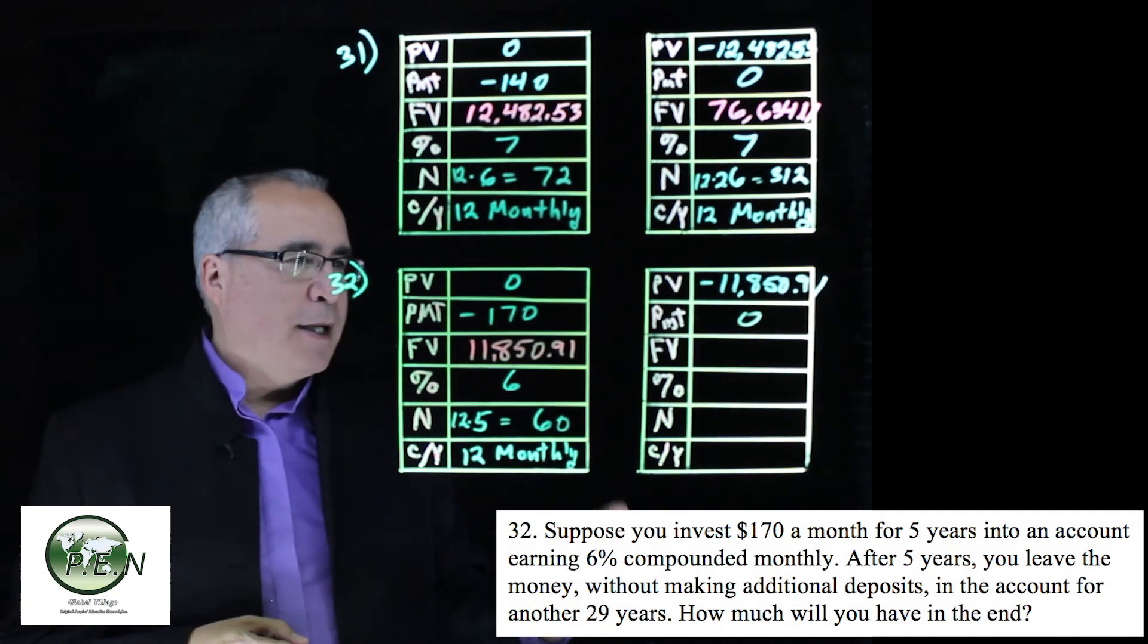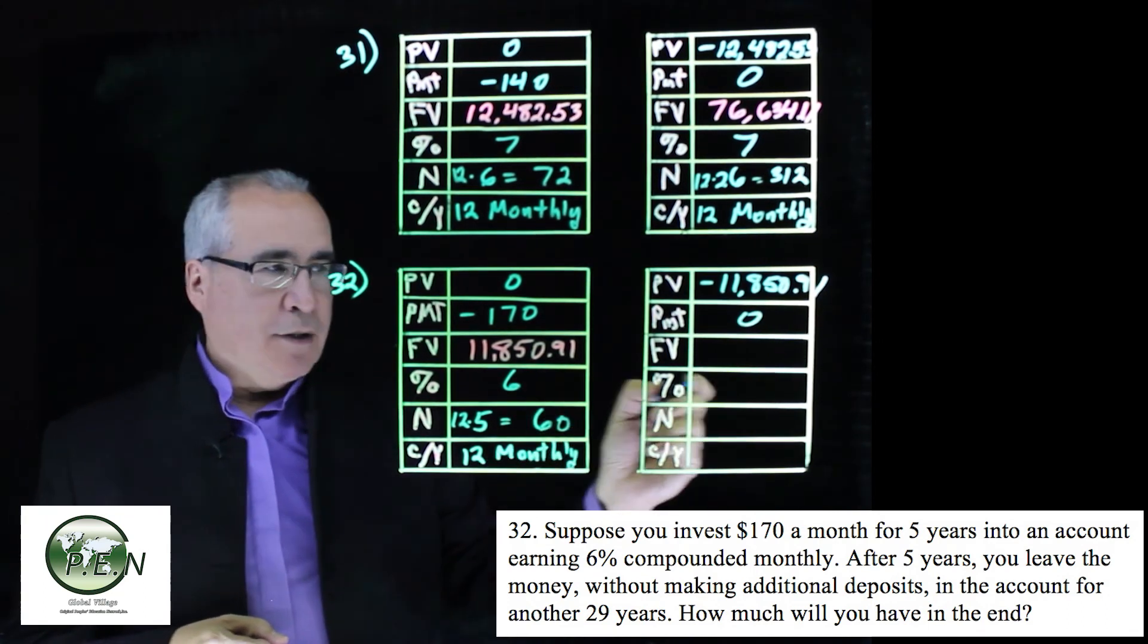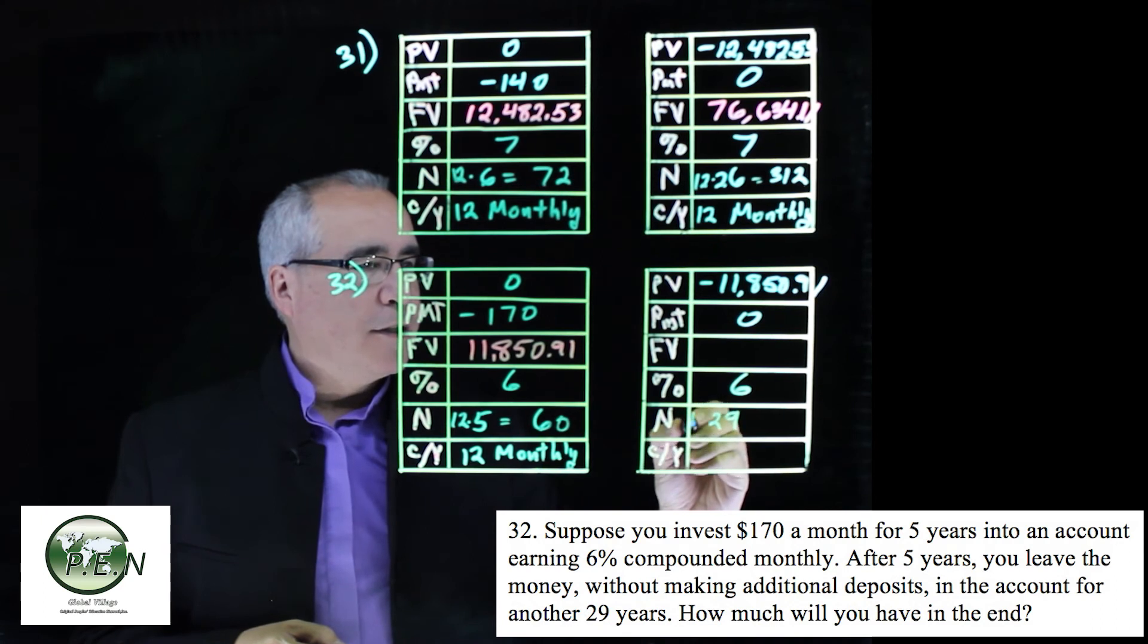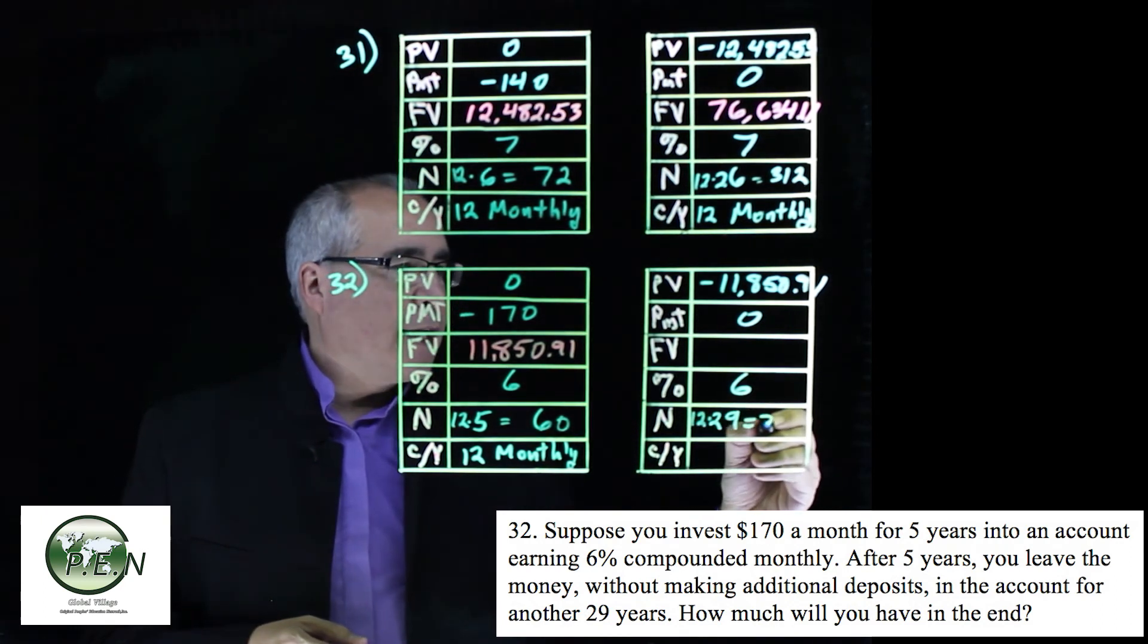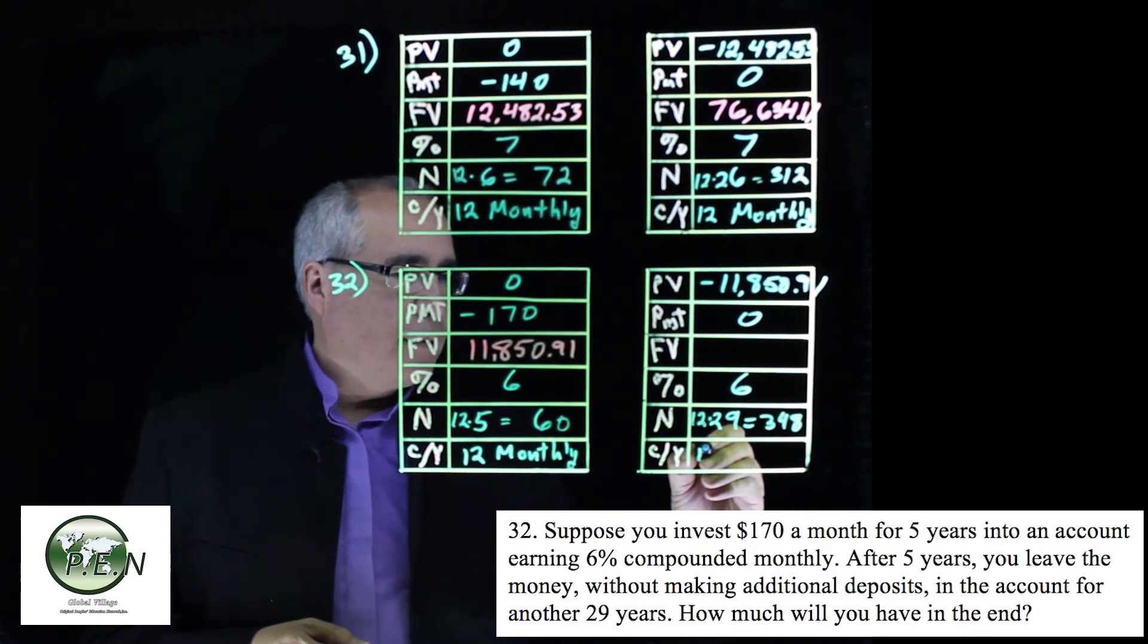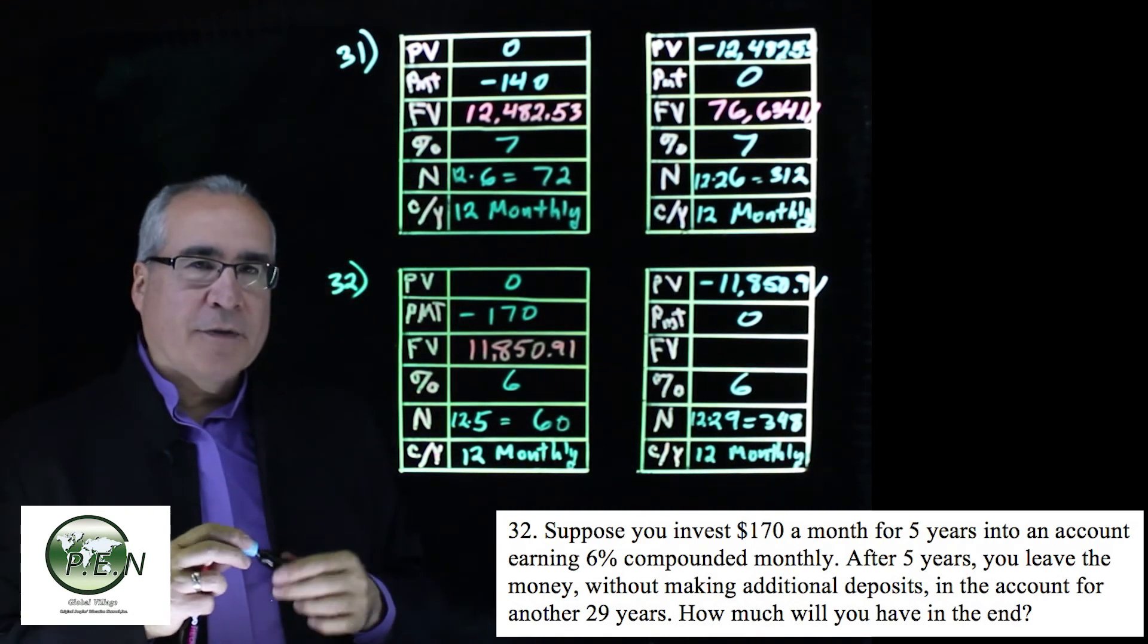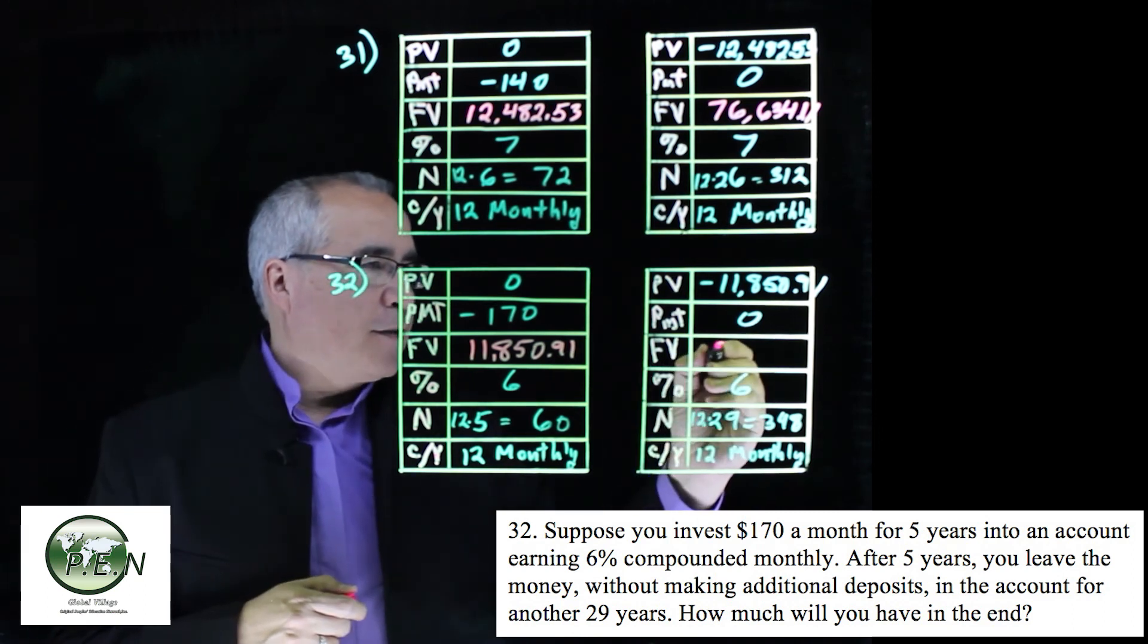No payments are going to be made, not into this account anyway. We're still getting our 6%, but this time we're going to do it over 29 years, so this will change. 12 times 29 gives us 348, and this is going to be monthly.